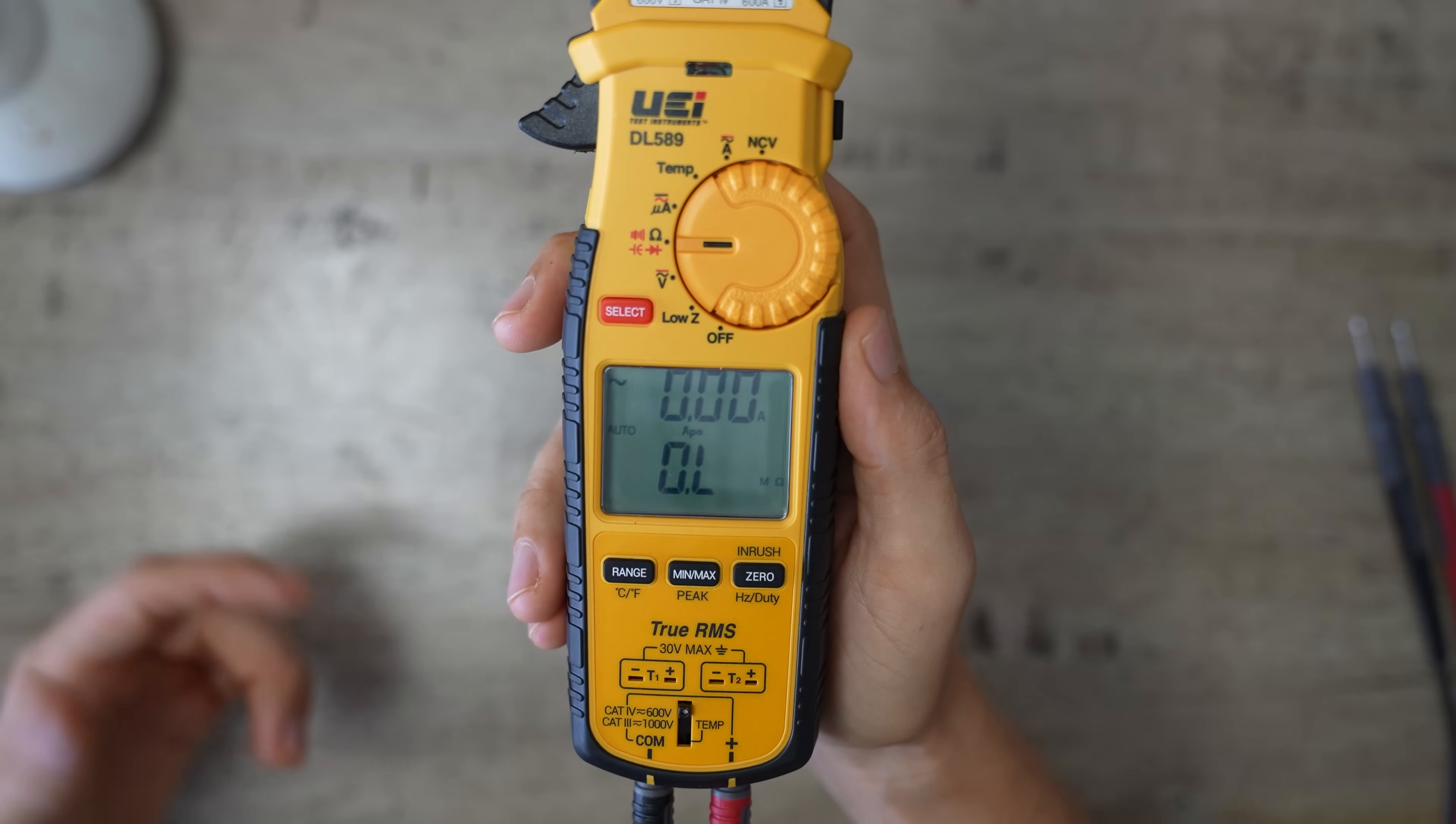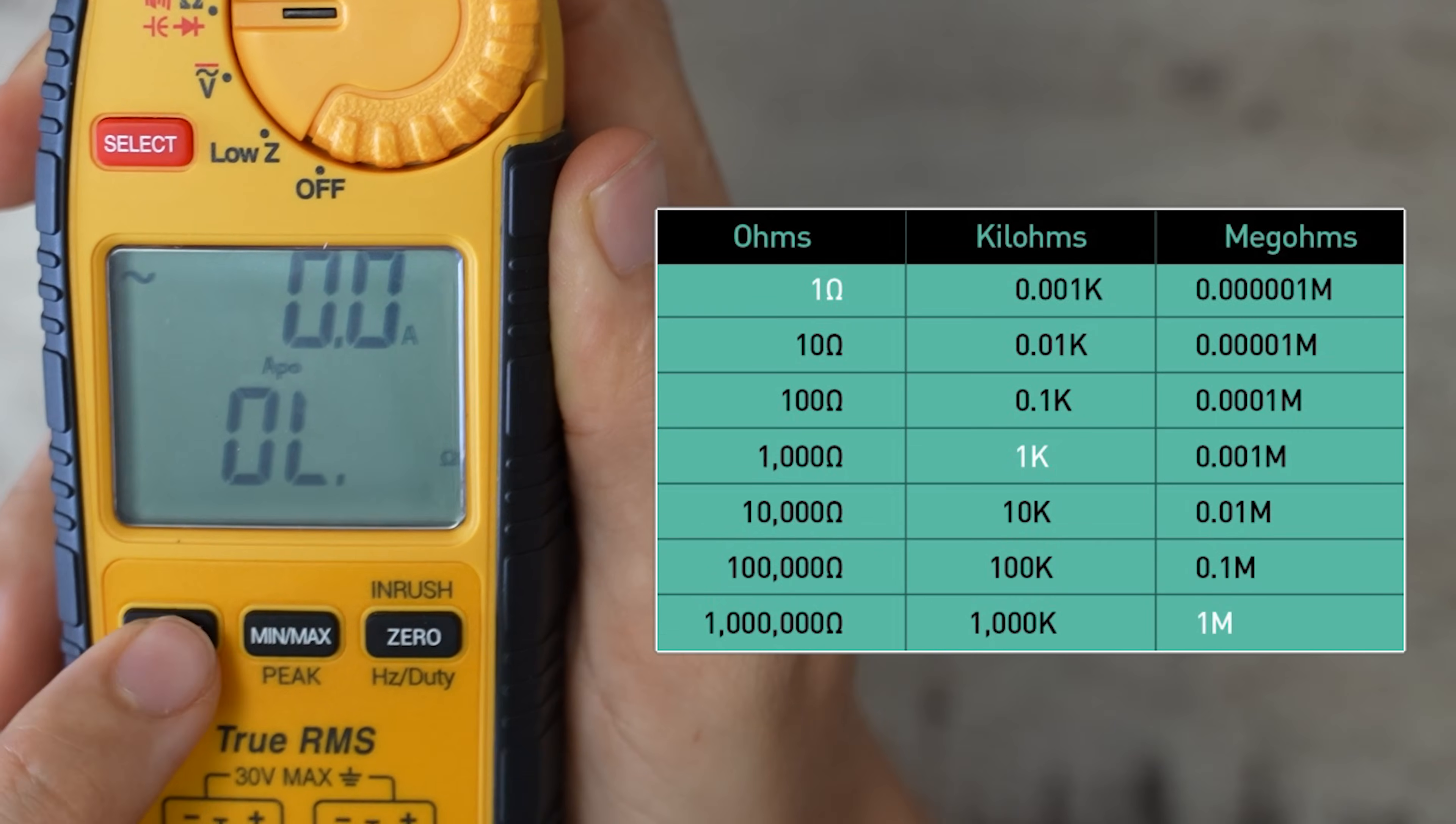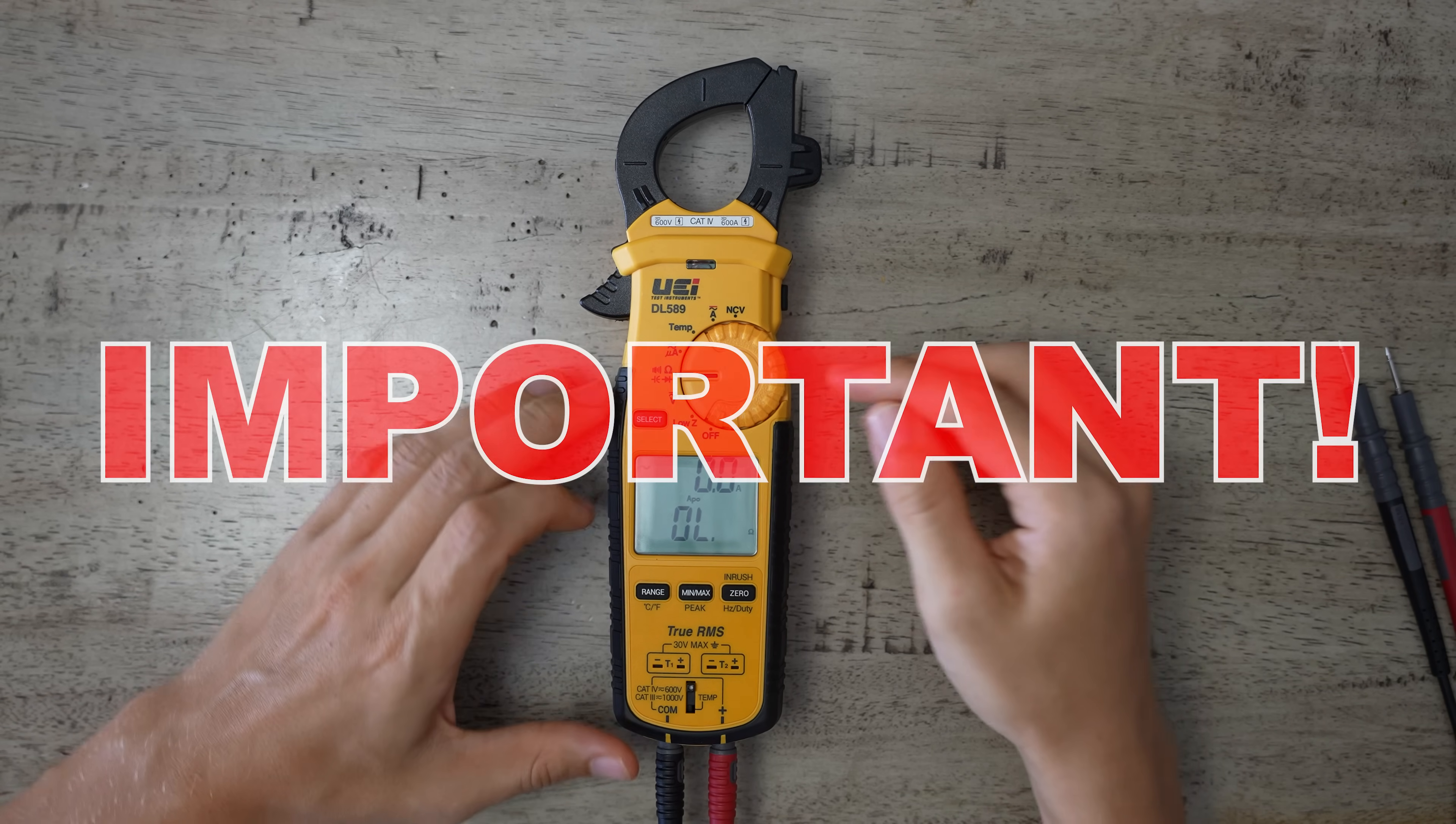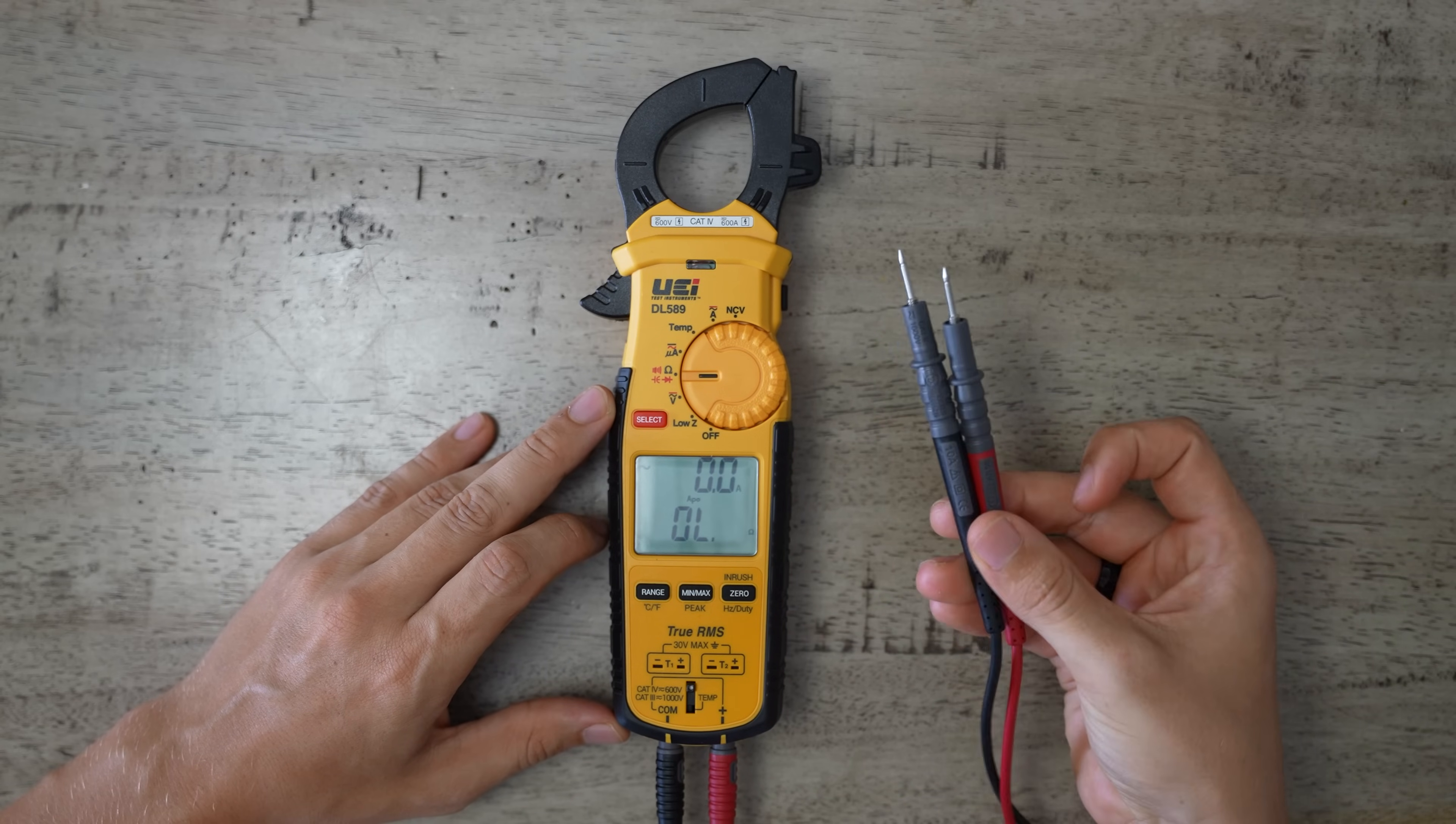Auto-ranging meters will automatically select the proper range for you, but it does allow you to manually switch the range if you want to do so. All I have to do is just press this range button, and it'll switch from ohms to kilo-ohms, and then higher, higher, mega-ohms, even higher, and back to ohms. Also, one very important thing to remember when you have your meter set to this resistance setting right here, is that the power has to be off to whatever you're checking. Power off, and usually the wires have to be disconnected before you check resistance on anything.